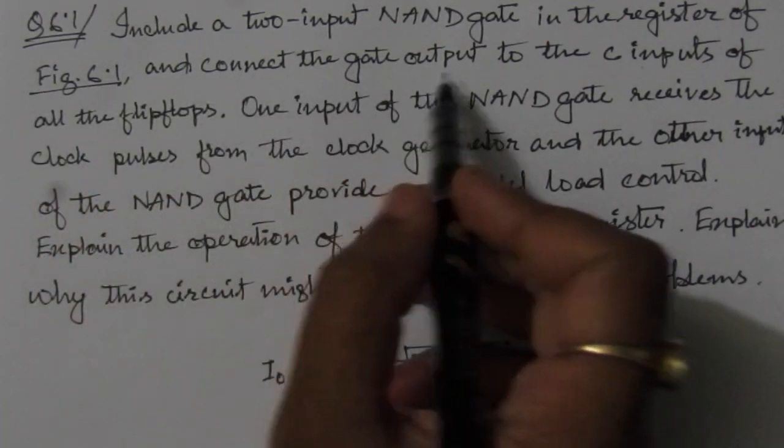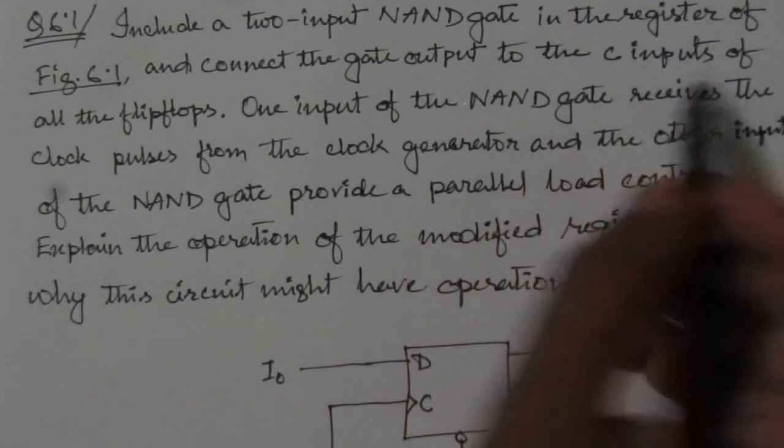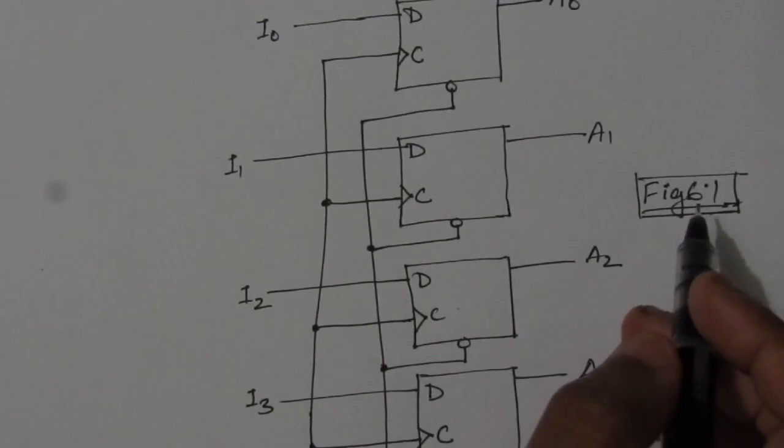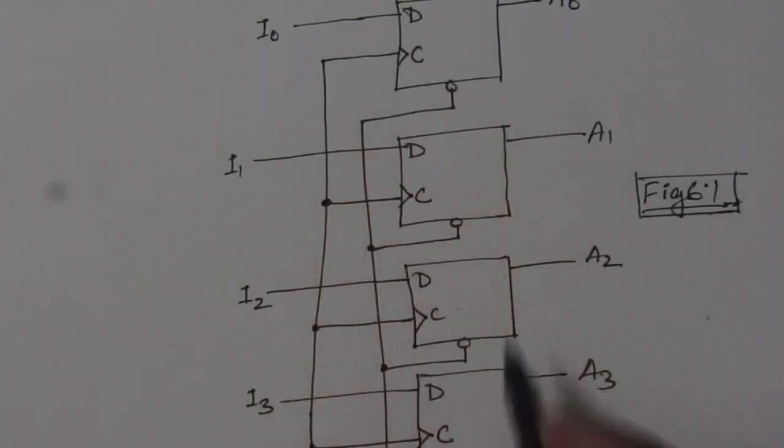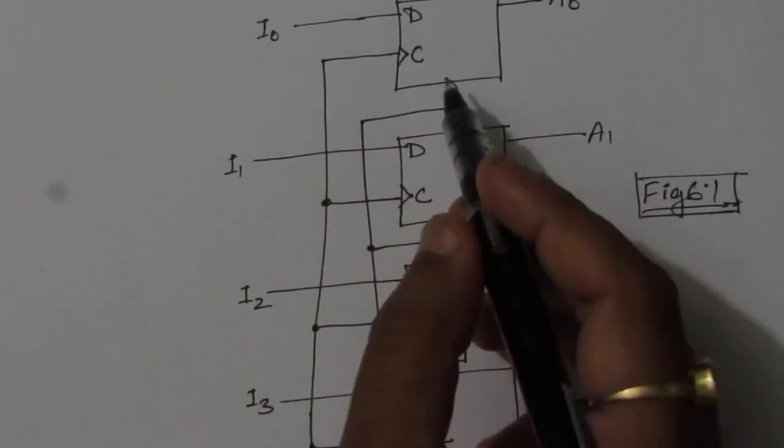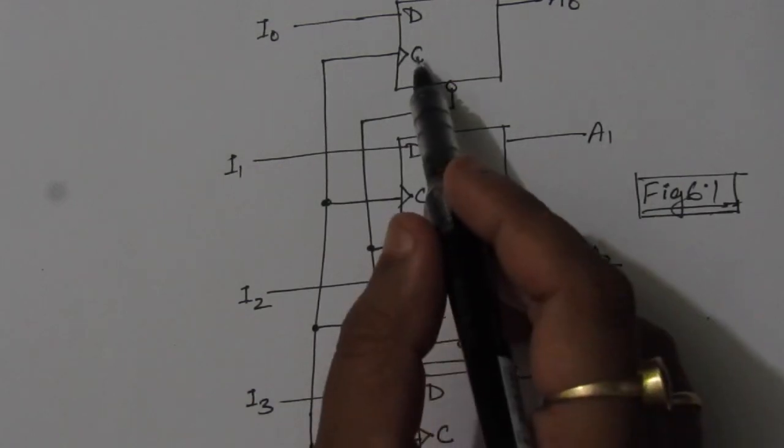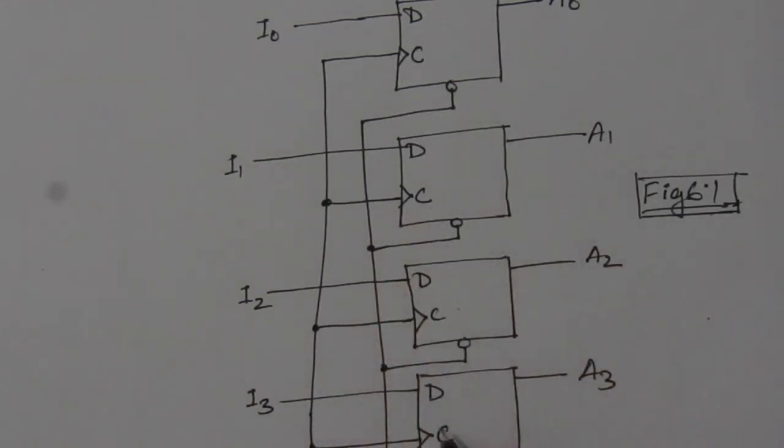Connect the gate output to the C inputs of the flip-flops. So here we have drawn figure 6.1. This is the figure 6.1. We have four flip-flops, four D flip-flops, and we have this C inputs here for each of them.